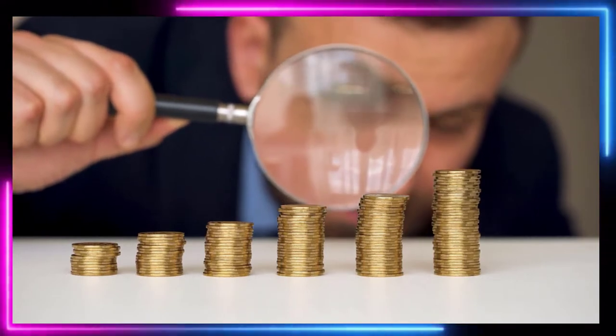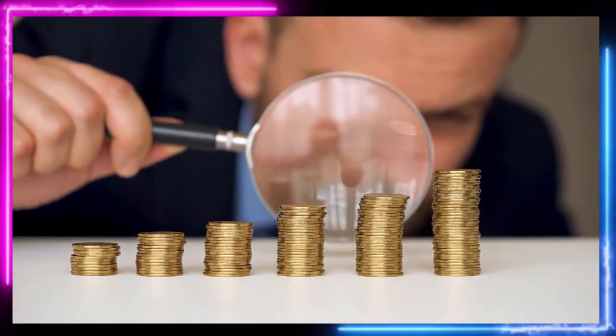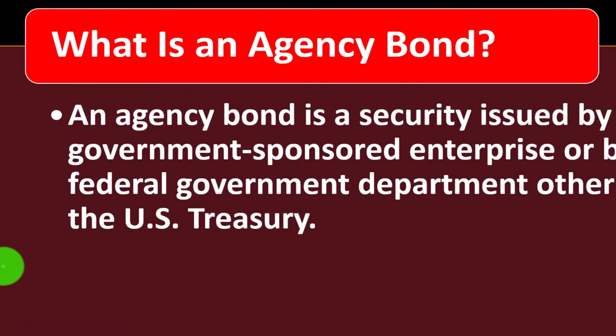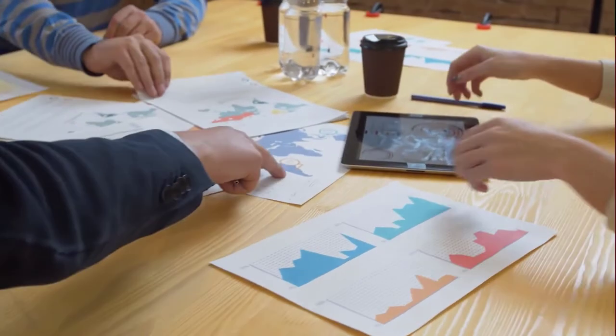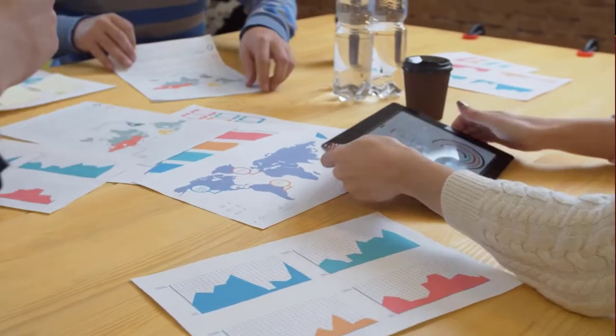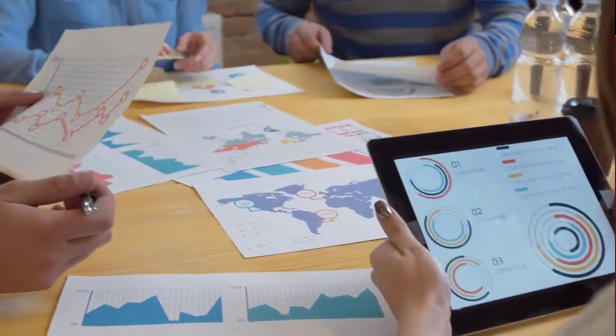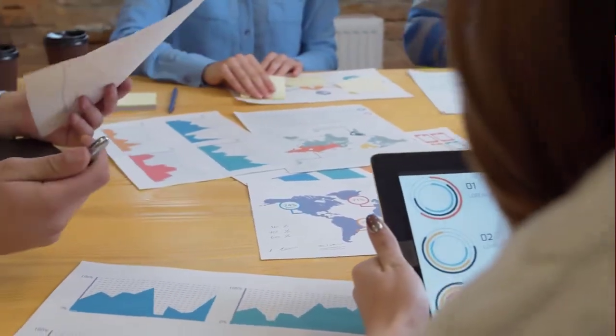In prior presentations we've been looking at investment goals, investment strategies, and investment tools. Keeping those in mind, we're now asking: what is an agency bond? An agency bond is a security issued by a government-sponsored enterprise or by a federal government department other than the US Treasury.